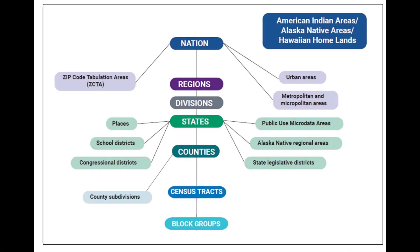ACS data are available at many geographic levels. ACS data are most commonly needed at the state, county, place, census tract, and block group geographic levels. In this visualization, you can also see the smallest geographic building block is the block group for ACS. You can learn more about the geographic areas for which ACS data are available in the next module of this course at the Geography and ACS page linked below, or through videos and webinars on Census Academy.